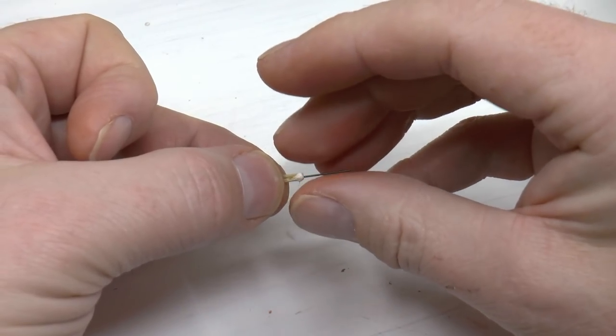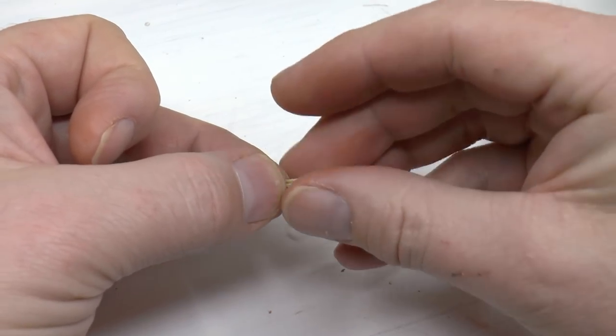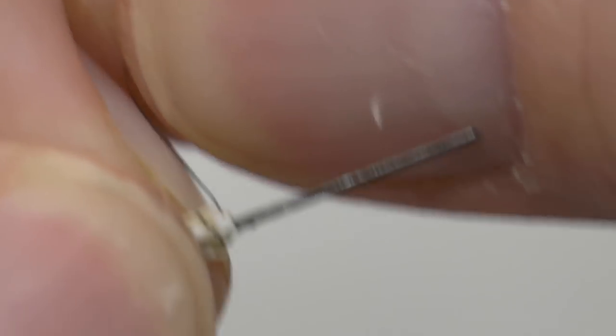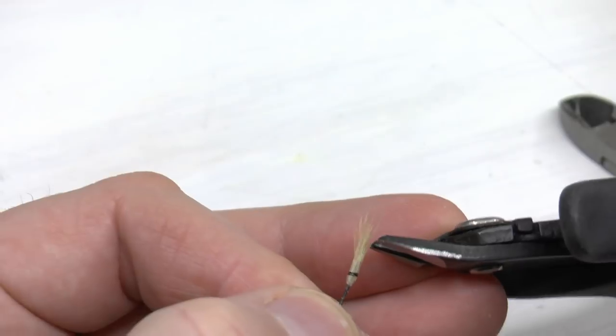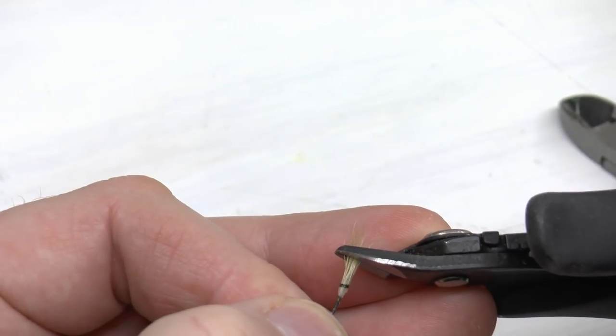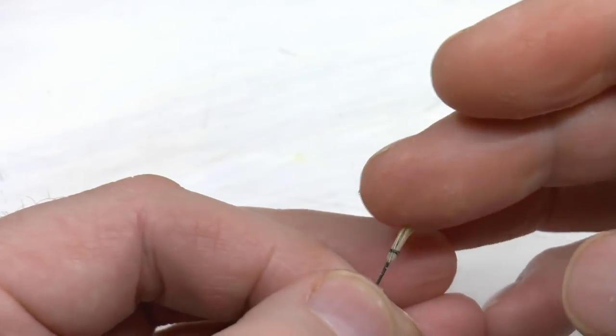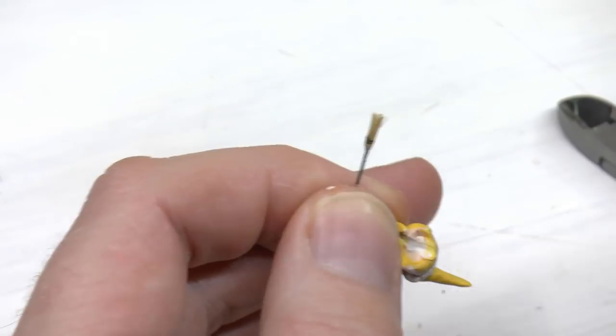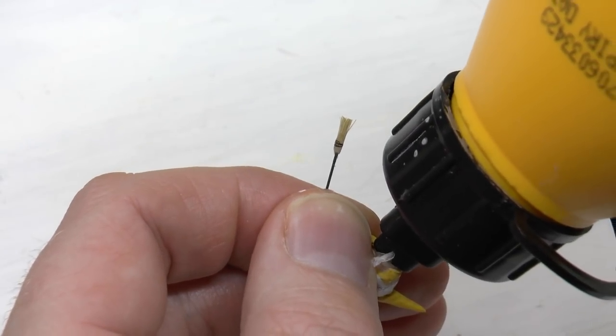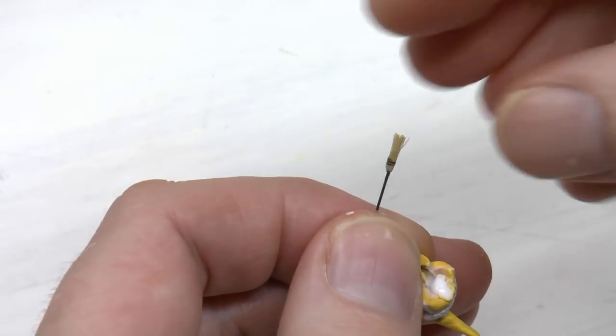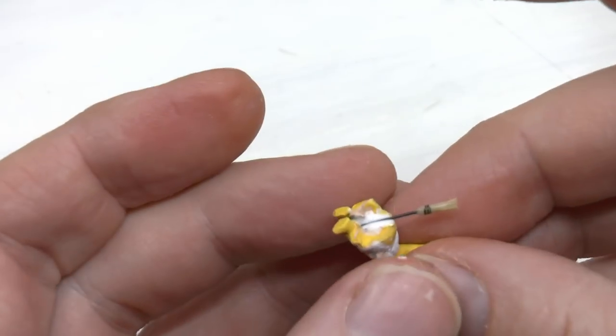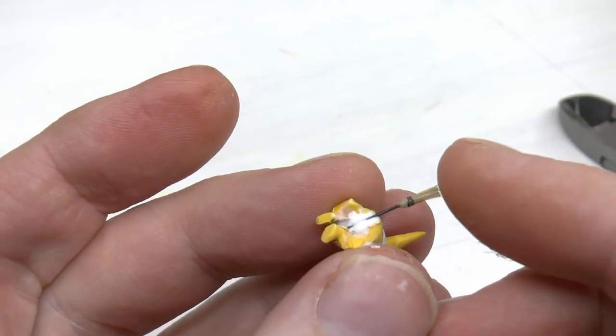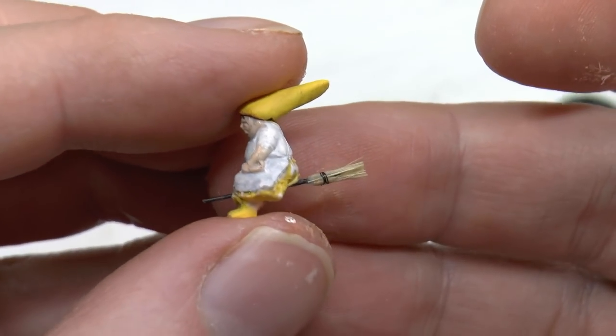Once the PVA glue is kind of semi-dry, I form it round and then I wind a piece of sewing thread, black sewing thread around it. And we're done. Now it's just to cut away some of those long brush hairs. And here we are. I fixed the broom to the witch using the same type of PVA glue. And this is what she looks like.